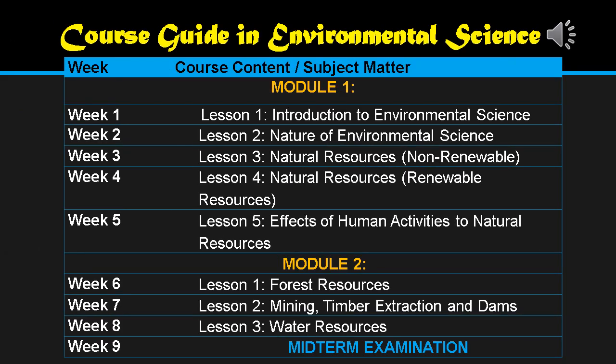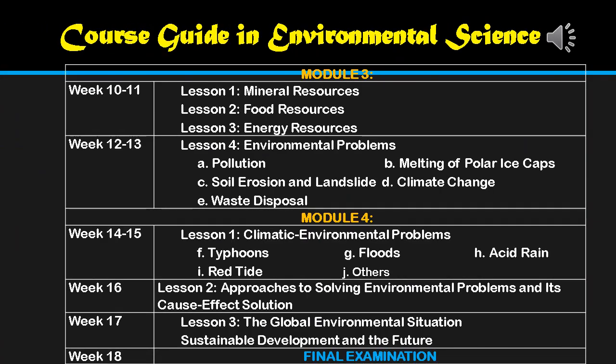The course guide for Environmental Science is divided into four modules. For the midterm, we have Module 1 and Module 2. Module 1 covers: introduction to environmental science, the nature of environmental science, natural resources, non-renewable and renewable resources, and effects of human activities on natural resources. Module 2 covers forest resources, mining, timber extraction, dumps, and water resources. Week nine will have the midterm examination.